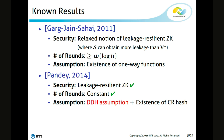Both the DDH assumption and the existence of a collision-resistant hash function are quite standard, and there's no problem using them in practice. However, from a theoretical perspective, it is important to determine the weakest possible assumption to construct a primitive. The use of the DDH assumption is not ideal in Pandey's work, because the DDH assumption is seemingly much stronger than the existence of a collision-resistant hash function or a one-way function. So in this work, I consider the problem of removing the DDH assumption from the result of Pandey.